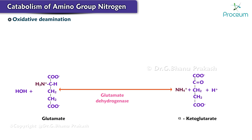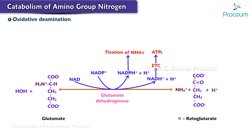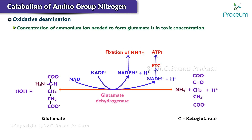Glutamate dehydrogenase is the only enzyme in the human body which can catalyze the reaction using either NAD or NADP as its coenzyme. NAD is used in the oxidative deamination of glutamate, releasing NH4+. NADH released during an oxidative deamination reaction is a welcome bonus as it can be oxidized by the electron transport chain to generate ATP. NADPH is used in the fixation of the NH4+ ion to alpha ketoglutarate to form glutamate.